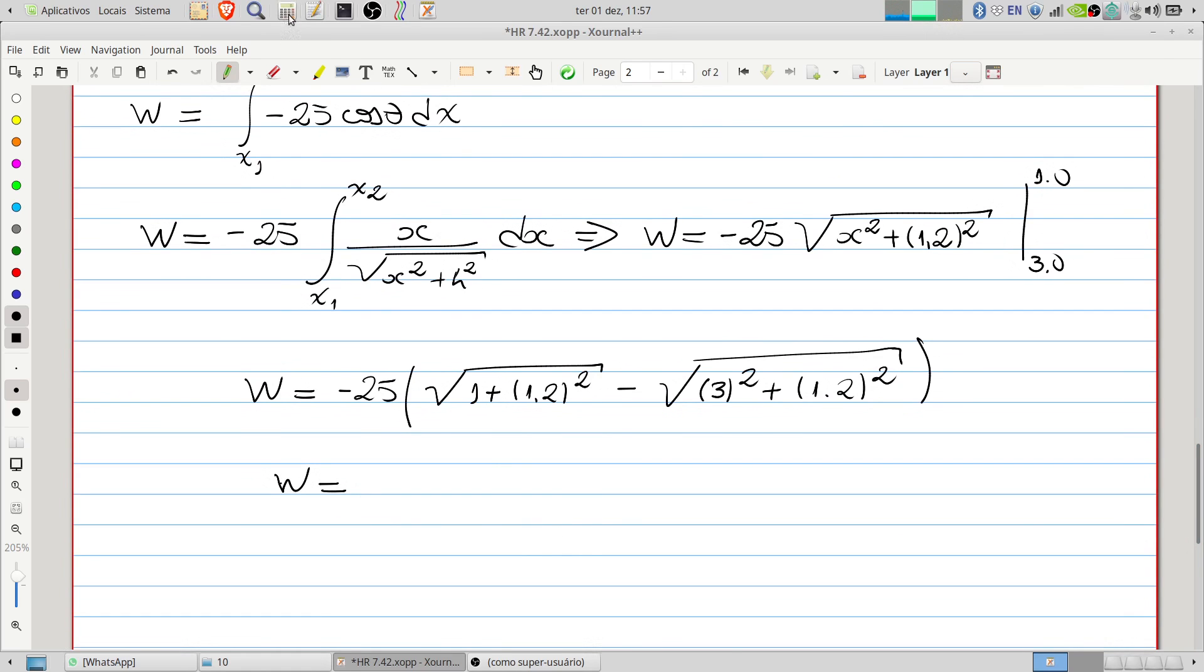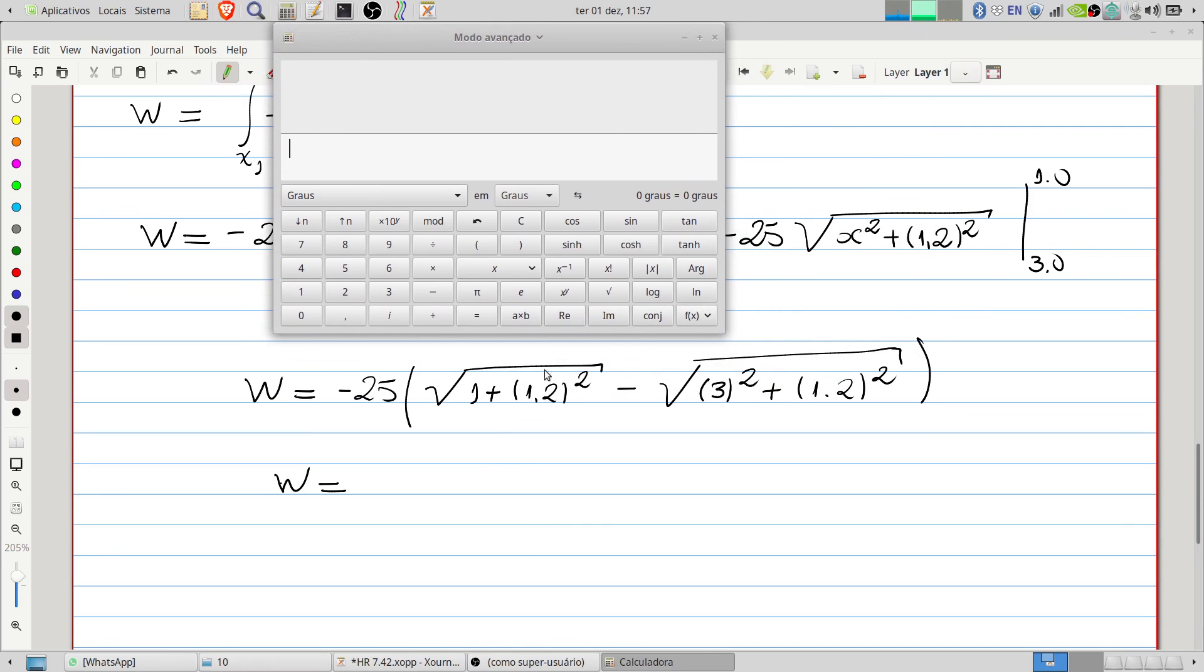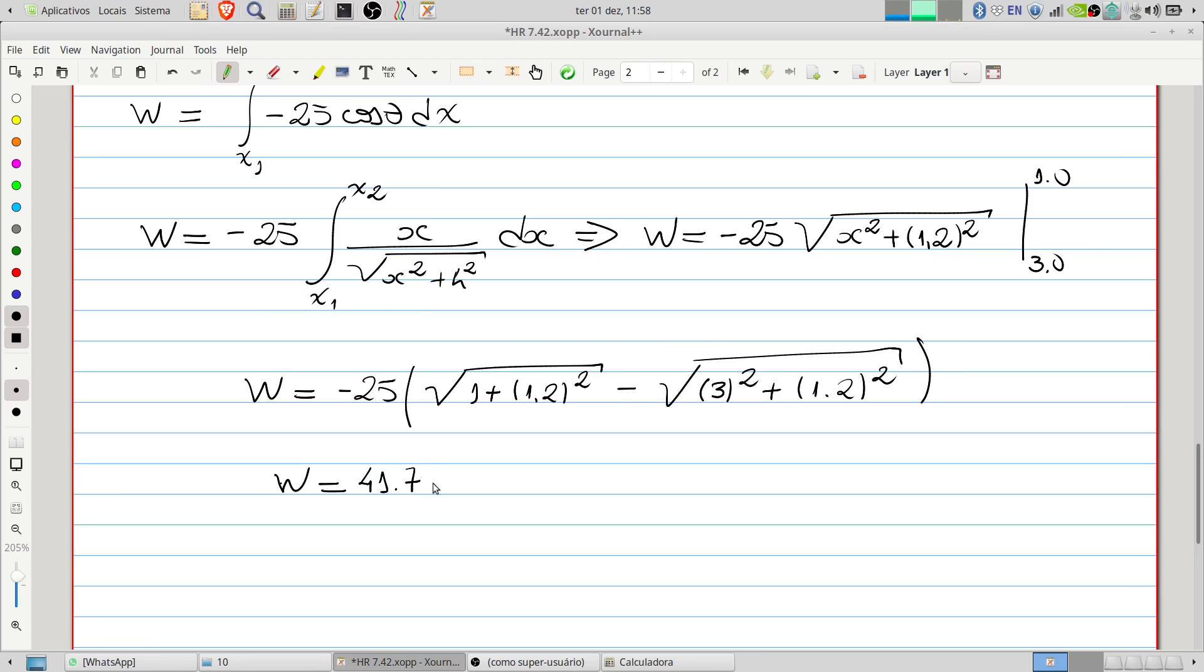Now let's use our calculator. We have minus 25 multiplied by square root of 1 plus 1.2 squared minus square root of 3 squared plus 1.2 squared, and we get 41.7 joules.